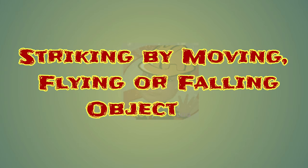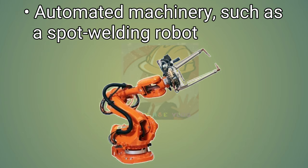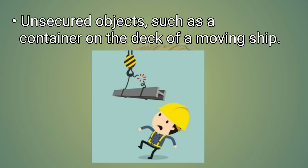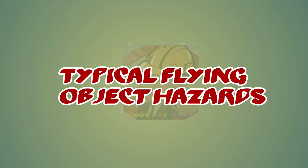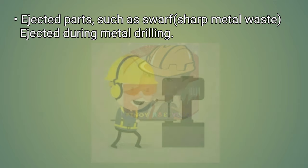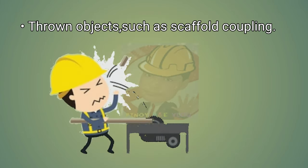Striking by moving, flying or falling objects. Typical moving object hazards: automated machinery such as a spot welding robot. Unsecured objects, such as a container on the deck of a moving ship. Typical flying object hazards: ejected parts, such as swarf — sharp metal waste — ejected during metal drilling. Thrown objects, such as a scaffold coupling.